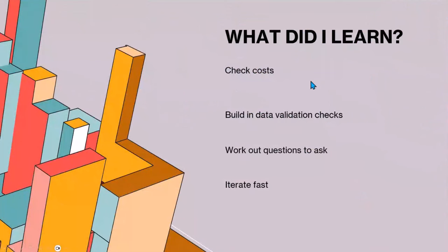Kevin's key lessons learned: check your costs before turning things on at scale, and don't expect cost overruns to appear in the portal immediately. Check data governance and validate your data is correct. Think ahead about what questions you want to ask before building the index — Kevin had to go back and add session codes and other metadata. Be prepared to iterate fast — the environment is changing quickly, and new versions of Teams AI will reduce the amount of custom work needed.